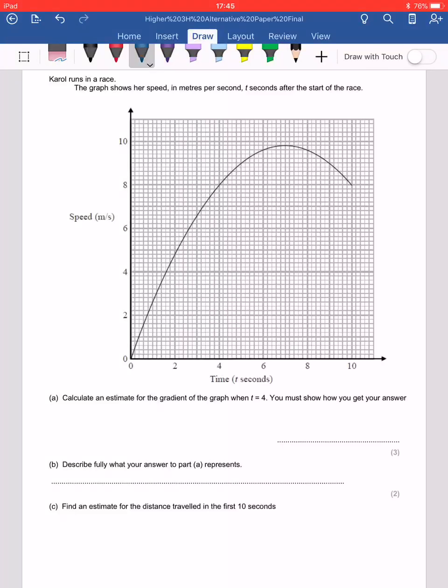I have to show how I get my answer. This is going to be a little bit wobbly just because I don't have a straight line. It's telling me work out the gradient for the graph when t equals 4. So t equals 4 is here. I just go up, so I have to work out the gradient here at this point.